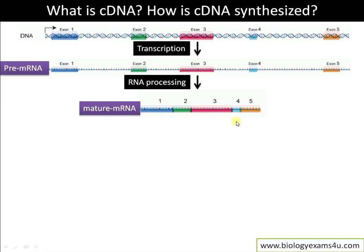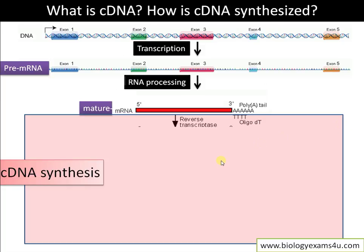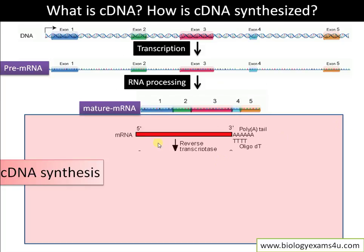The key point is that cDNA is synthesized from mature mRNA, where only exons are present. The mRNA has a special feature: it has a poly-A tail at the 3' region and a 5' cap. Because of the poly-A tail, we can easily design a primer for cDNA synthesis.